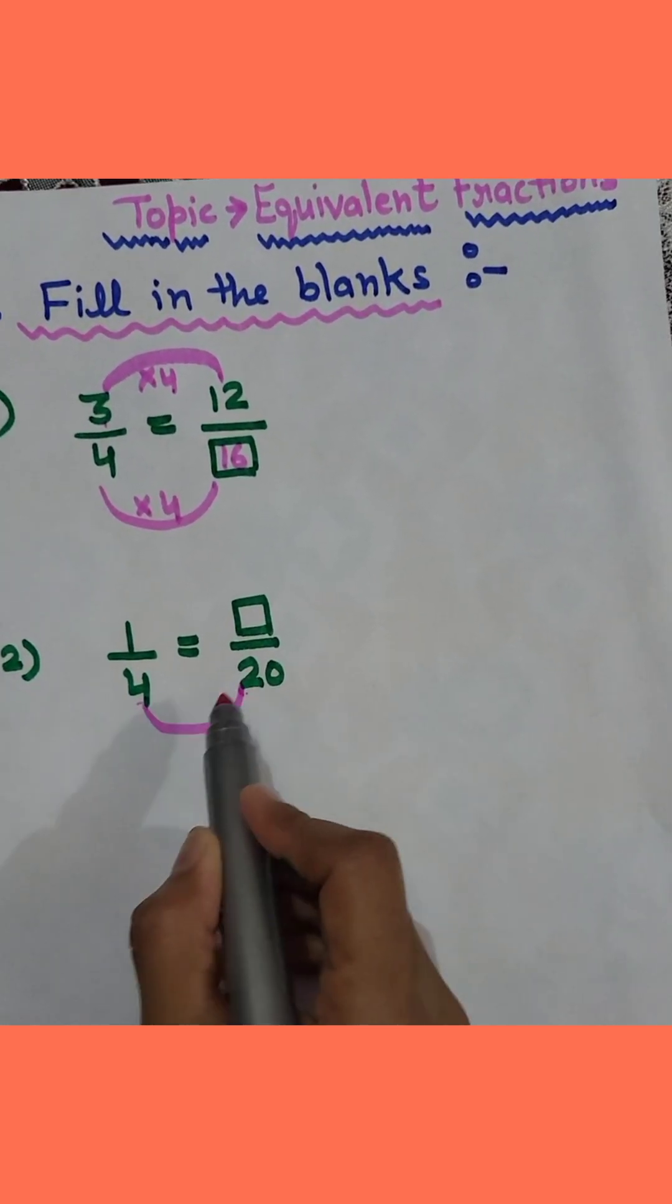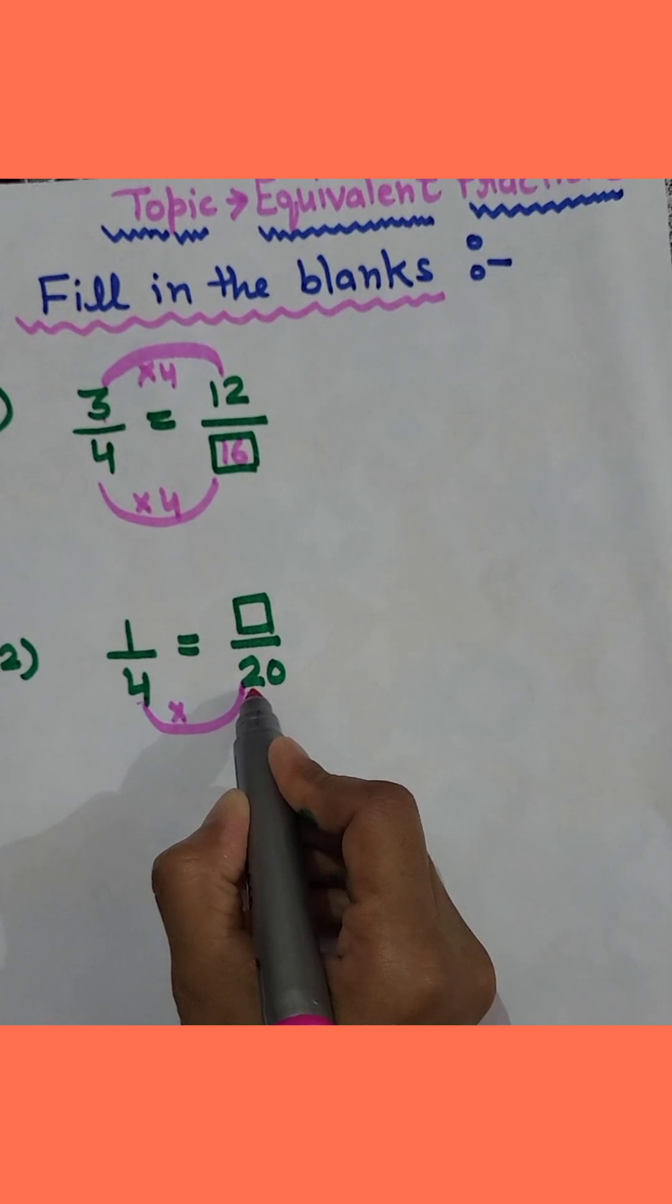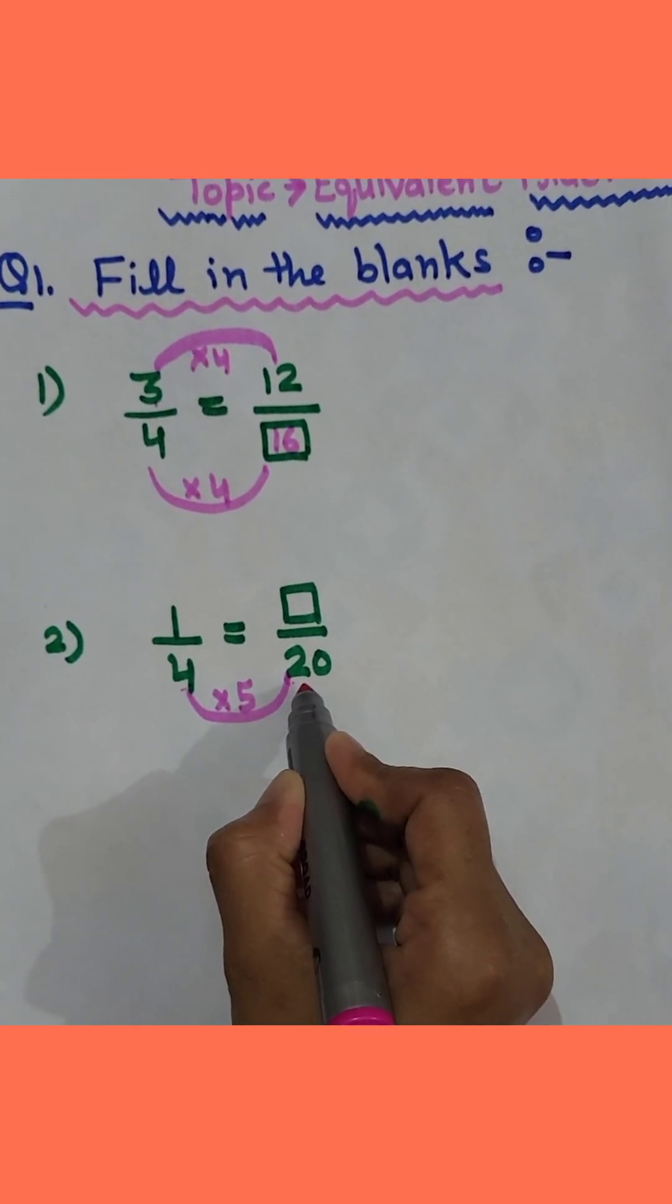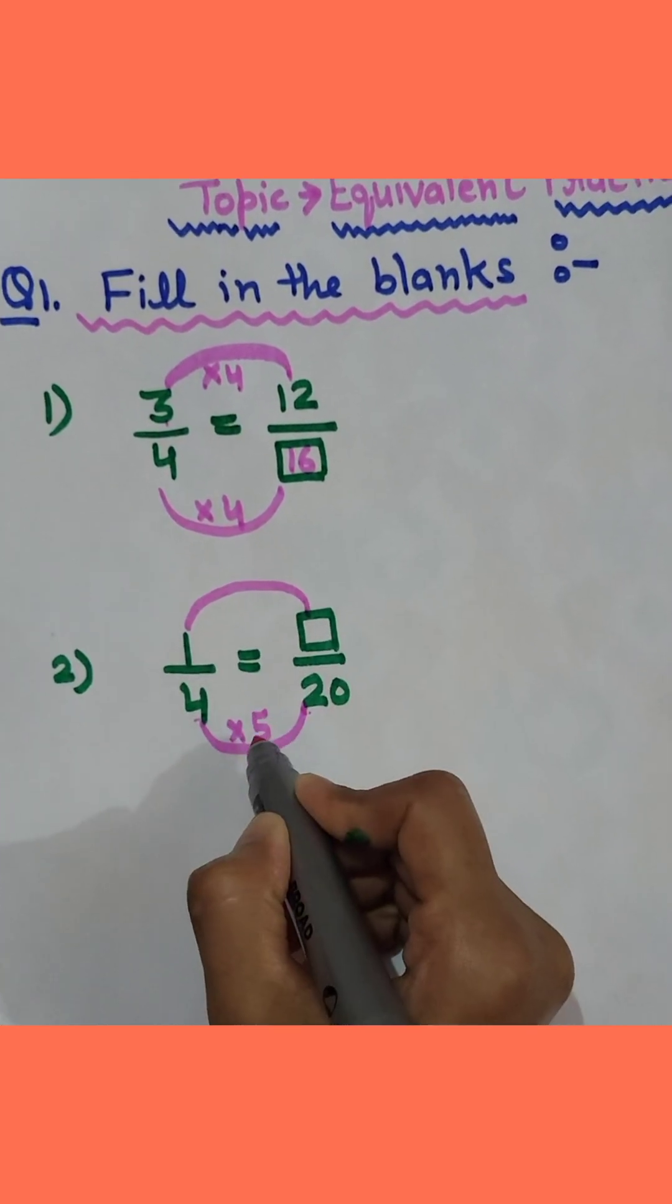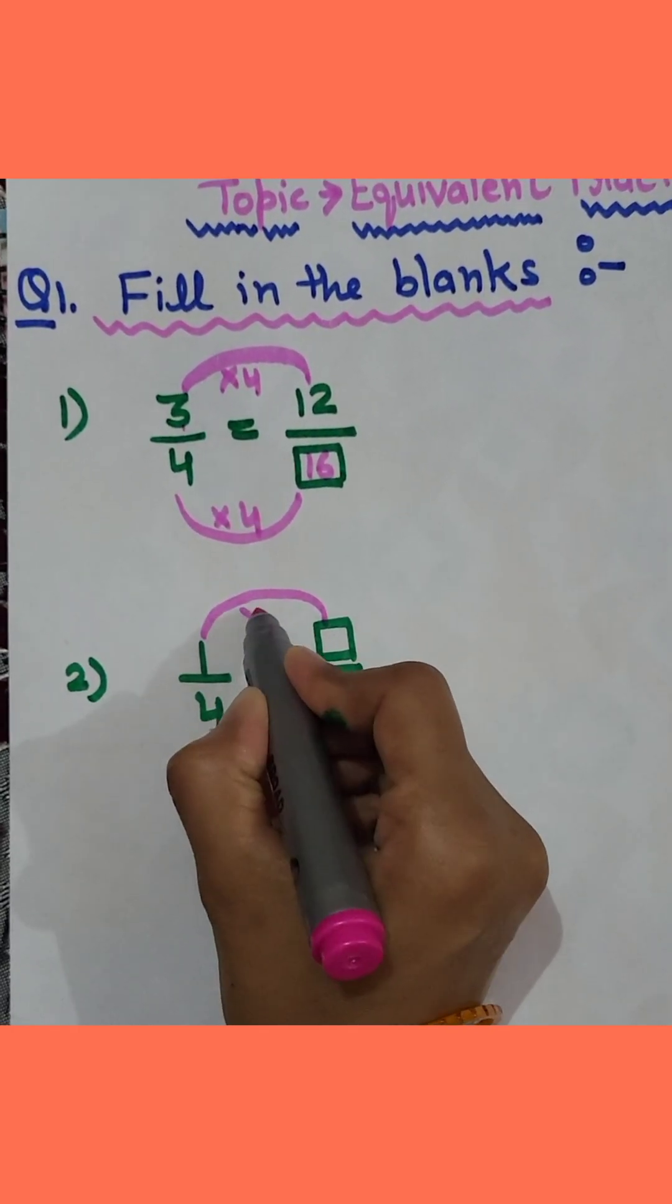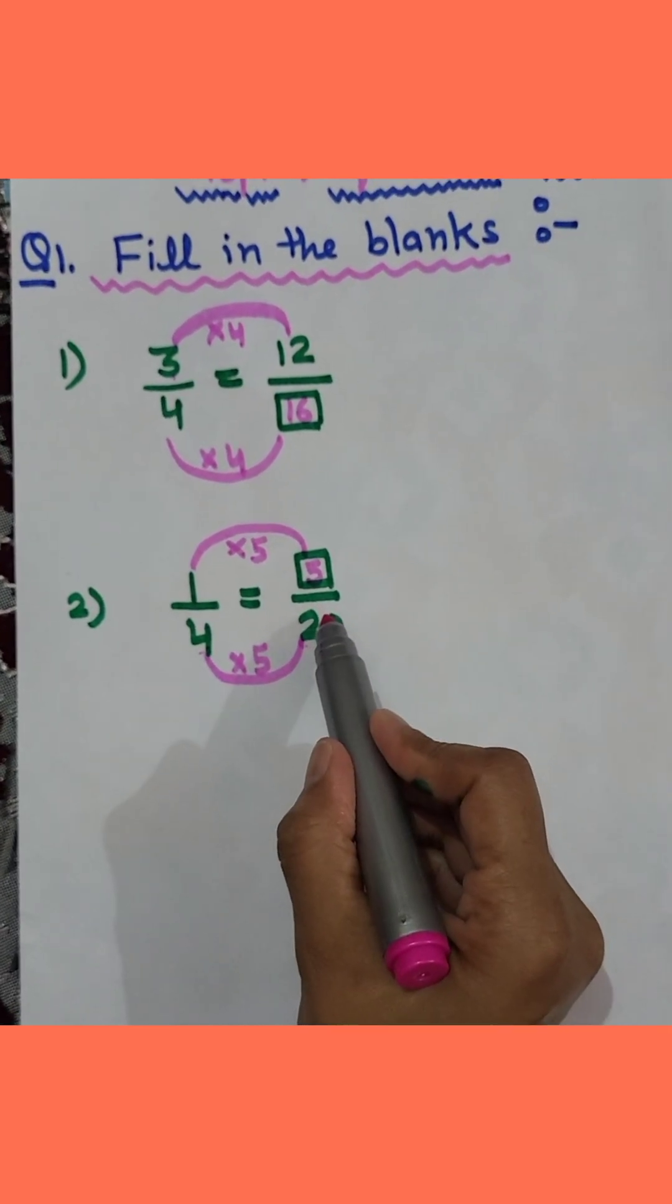See 4. How many times you will multiply 4 so you will get 20? So 4 fives are 20. The same number you will multiply the numerator by. So 1 multiply 5 is 5. So our answer will be 5.